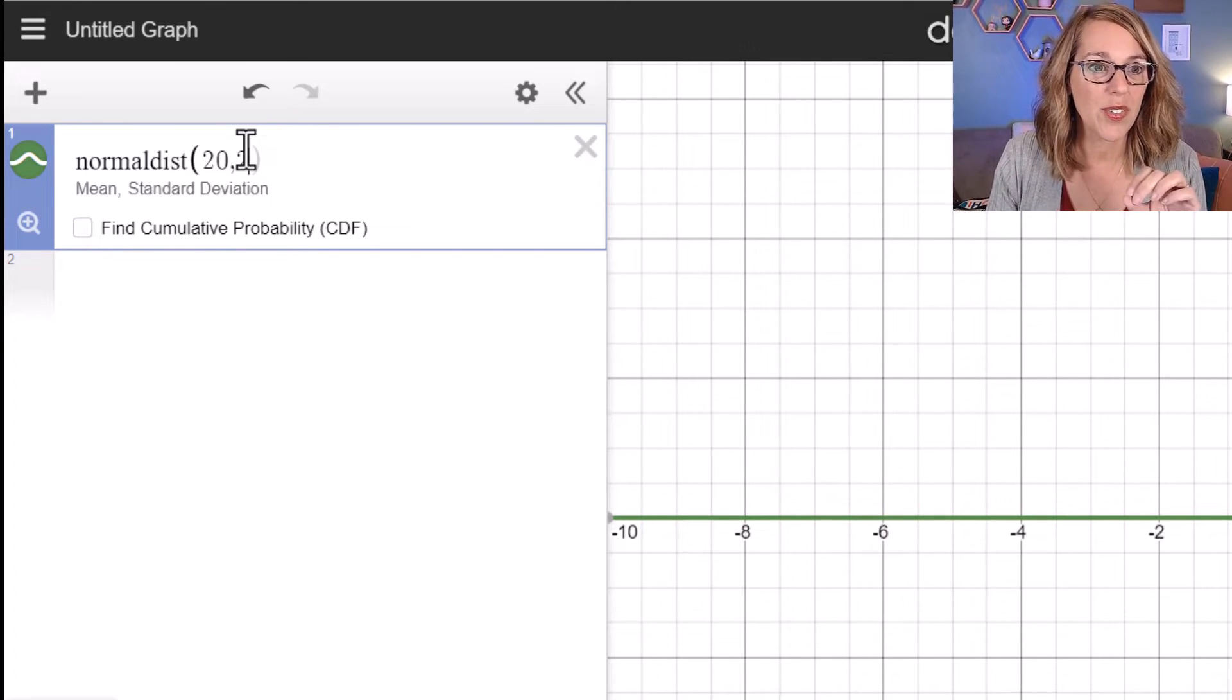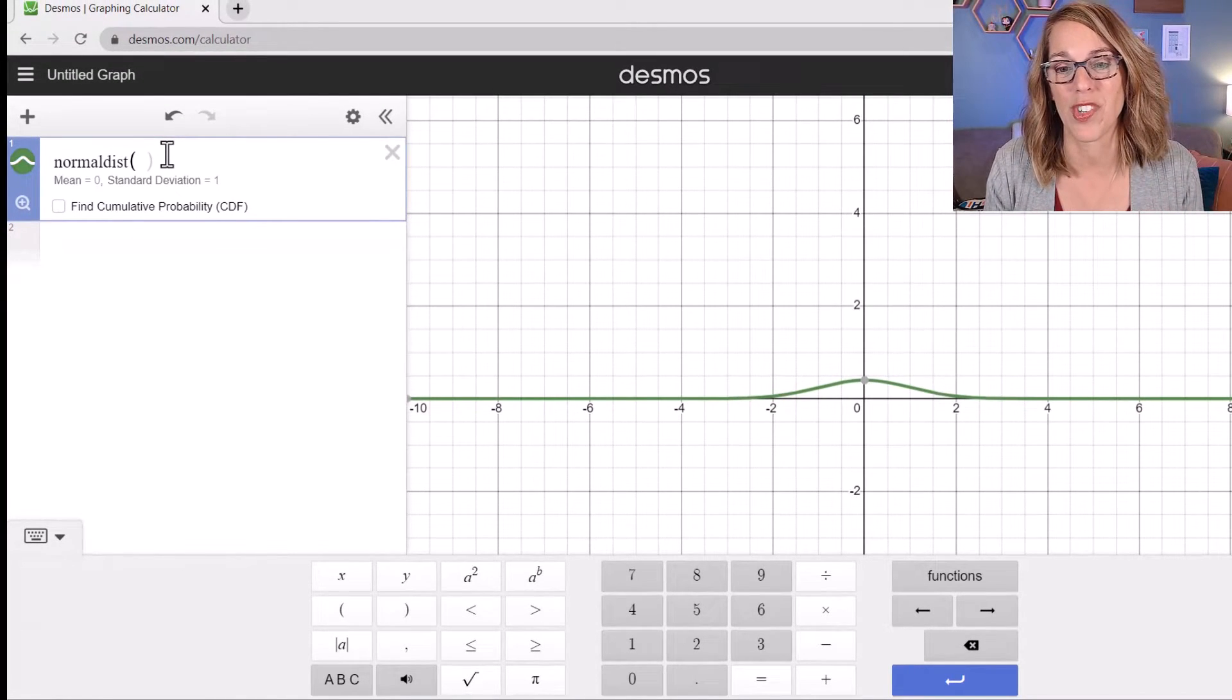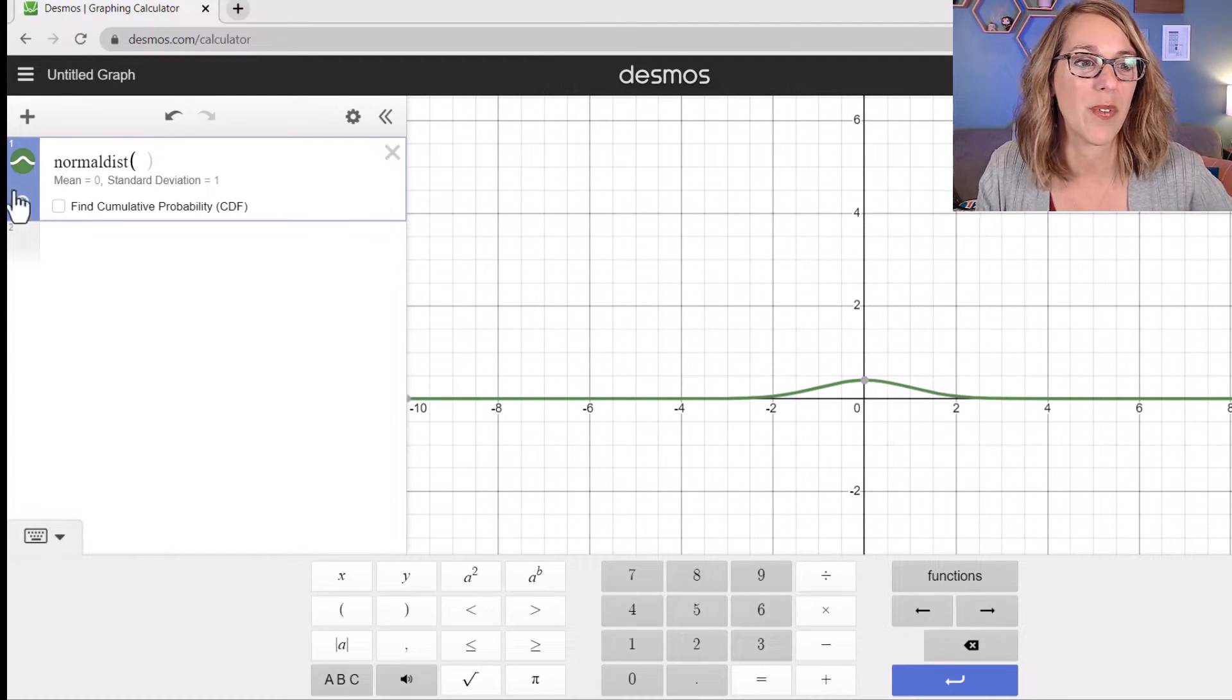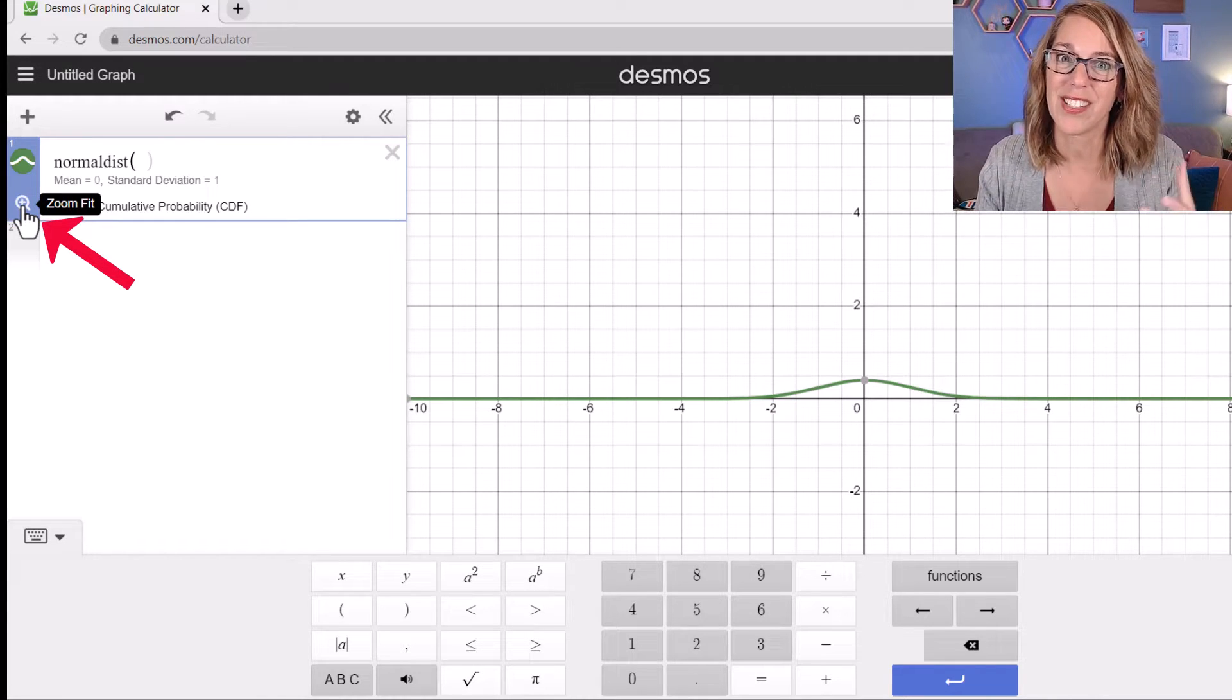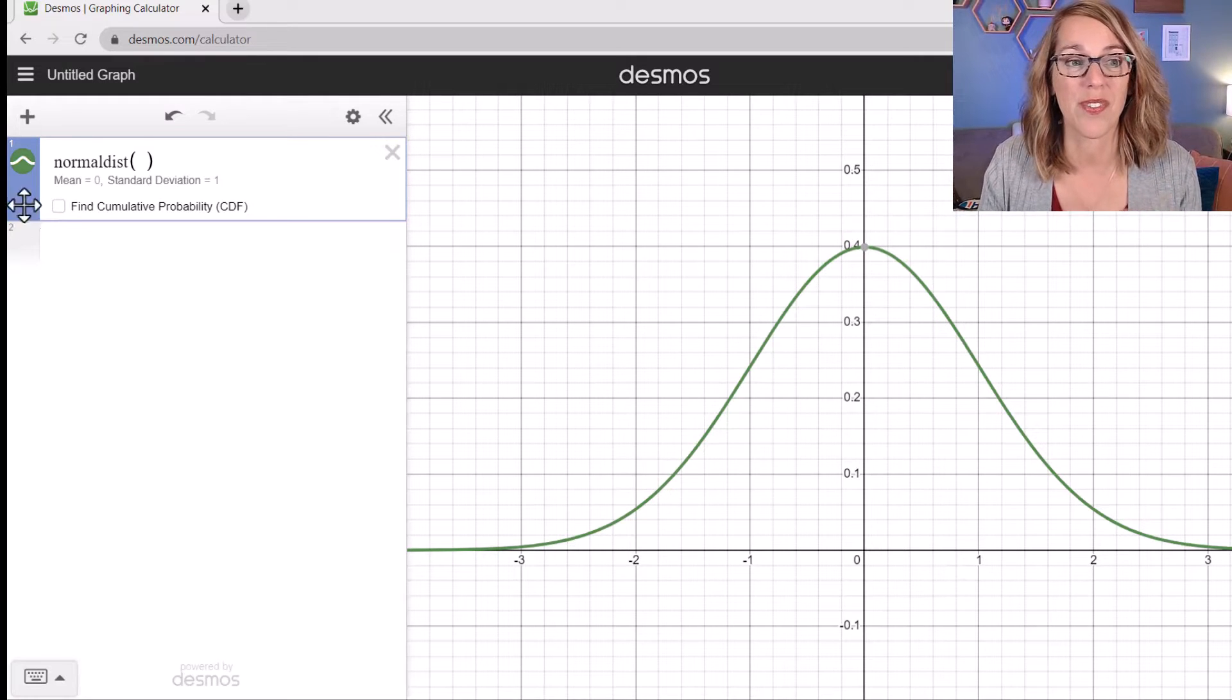I am going to just get rid of those. So I'm in the standard normal distribution. It's a little bit squashed here in my default viewing screen. So I'm going to click on the zoom fit tool. It looks like a little magnifying glass. So let me click on this and I've got a much better view.